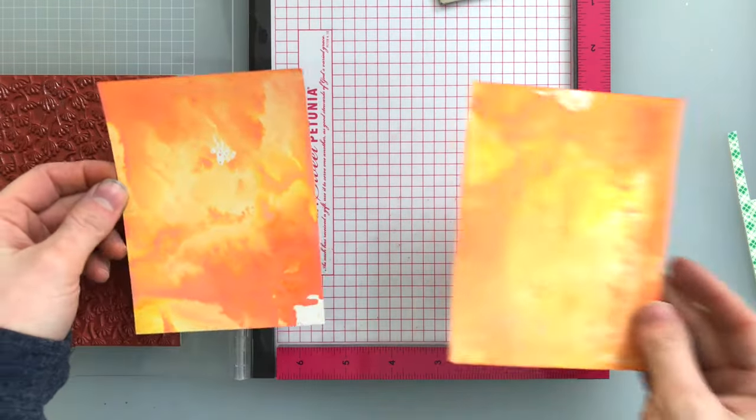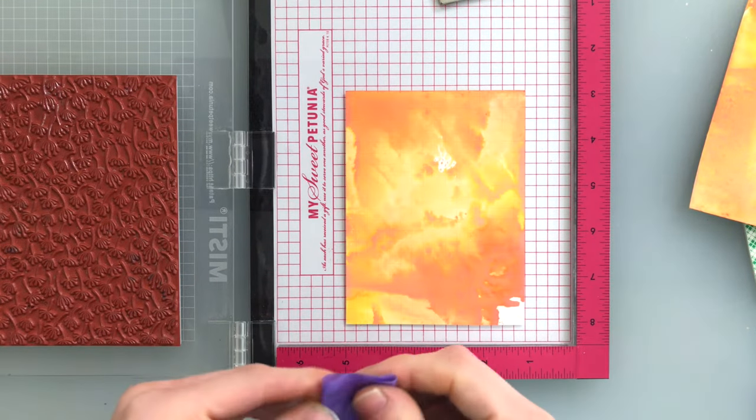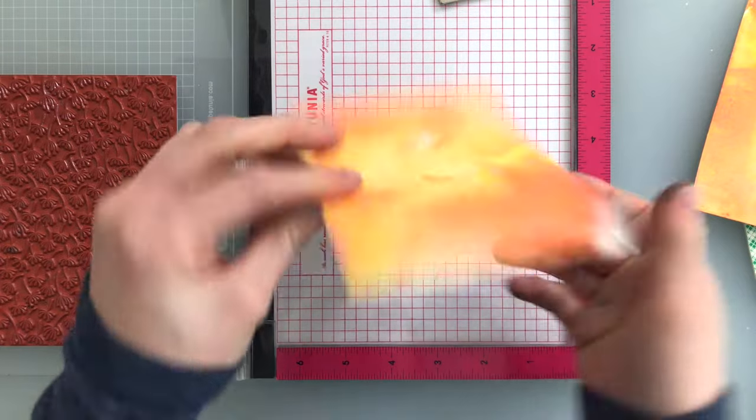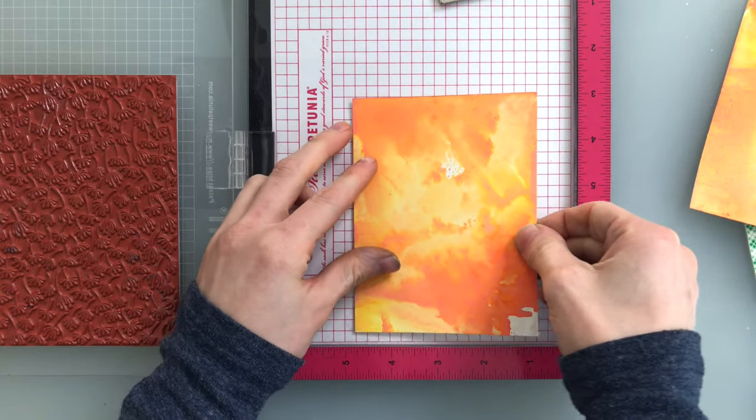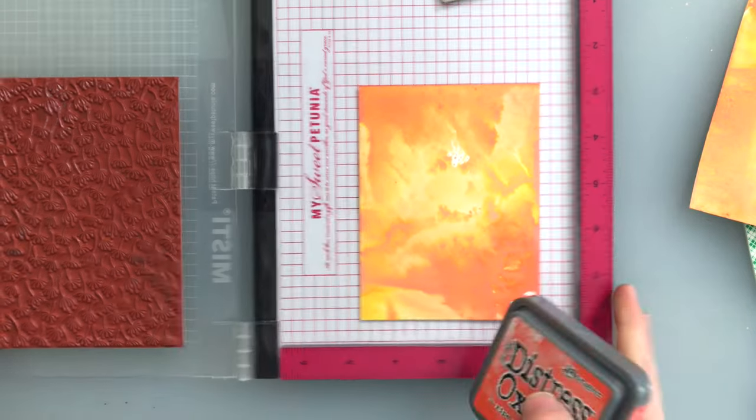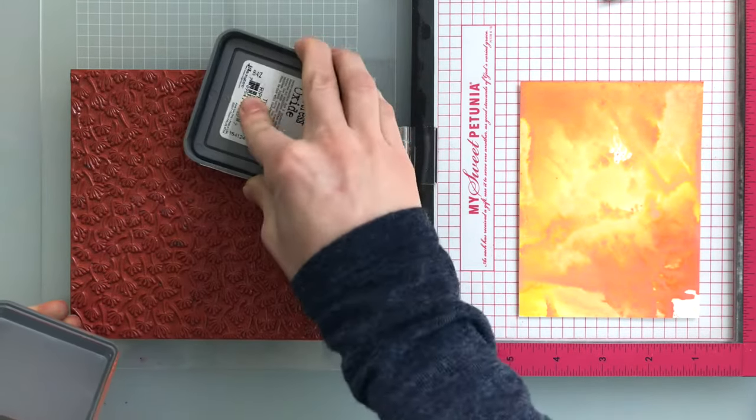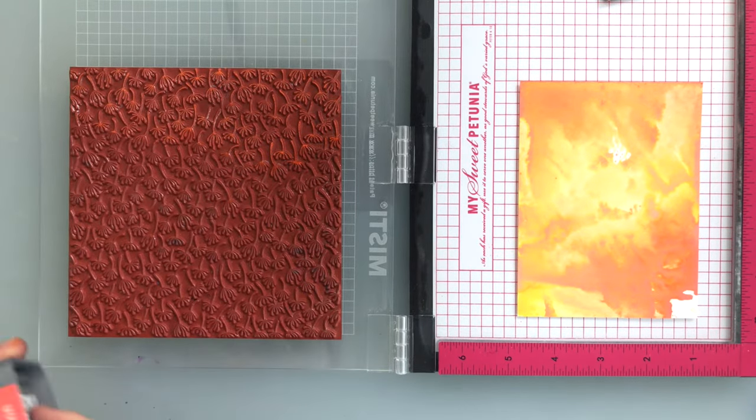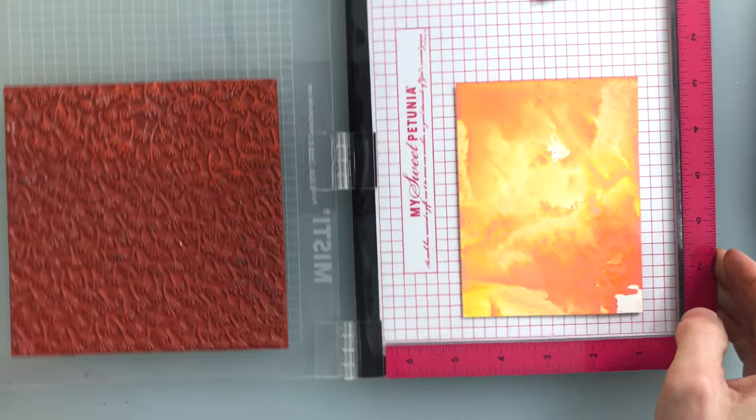Once those background panels dry, I'm going to bring them into my MISTI tool along with the Blowing in the Wind background stamp from Hero Arts. I'll tape my paper down onto my MISTI to make sure it doesn't go anywhere because I am going to be stamping multiple times. Now you don't have to stamp multiple times, but I wanted to create a different tone-on-tone effect with this stamping.